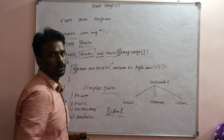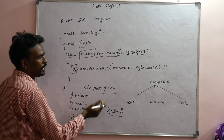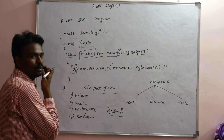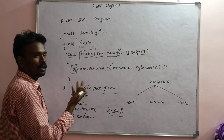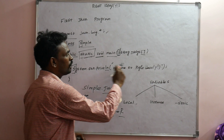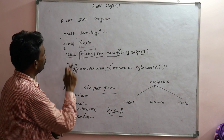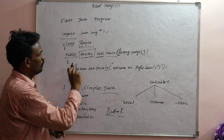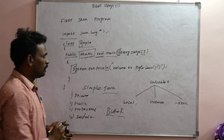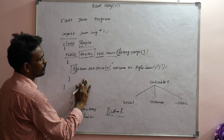System.out.println is used to print a statement and move to the next line. In C++, you use cout, whereas in Java you use System.out.println. When you save the program, save it with the class name, for example Simple.java, and then compile it.